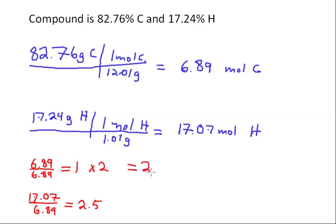So that'll be 2 here, multiplied by 2 here, multiplication symbol. That will be equal to 5. So the empirical formula of this compound is C2H5.